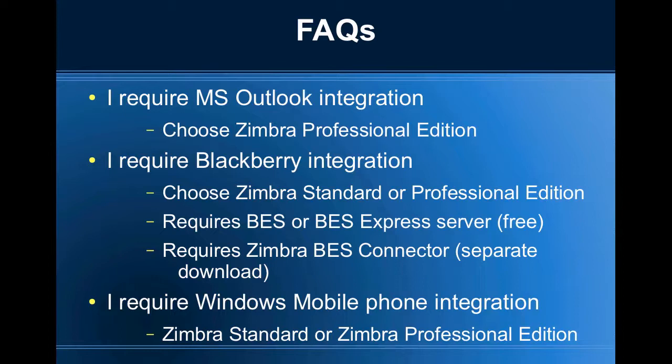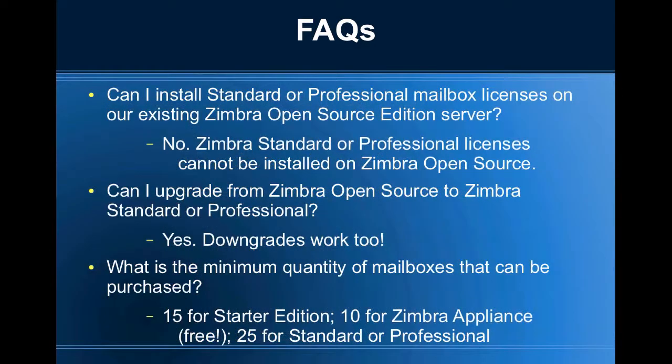If you require Windows Mobile Phone integration then choose Zimbra Standard or Zimbra Professional Edition. Can I install Zimbra Standard or Professional mailbox licences on an existing Zimbra Open Source Edition server? The answer is no — you cannot mix and match Zimbra Open Source with any of the other licence types; Zimbra Open Source can only have Open Source mailboxes. Can I upgrade from Zimbra Open Source to Zimbra Standard or Professional? Yes. And if you have to, you can also downgrade from Standard or Professional to Zimbra Open Source as well.